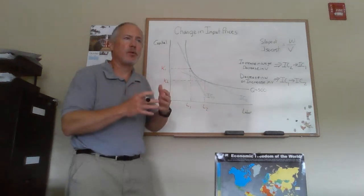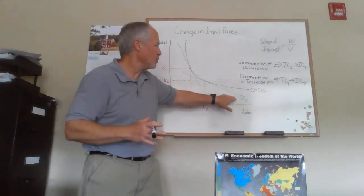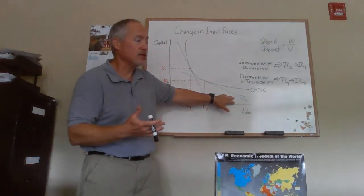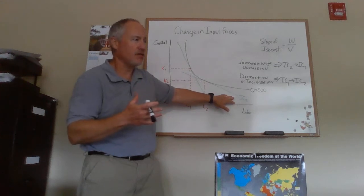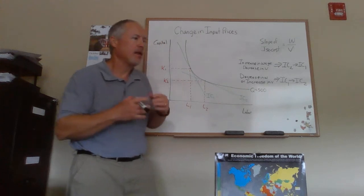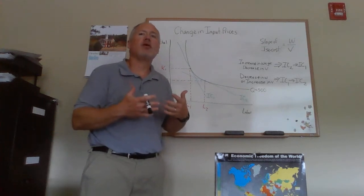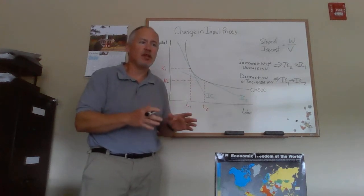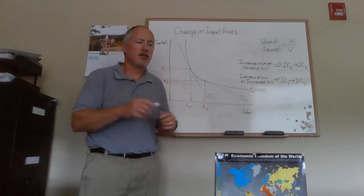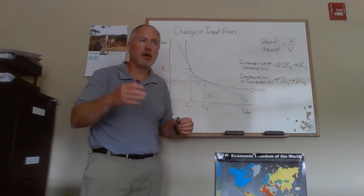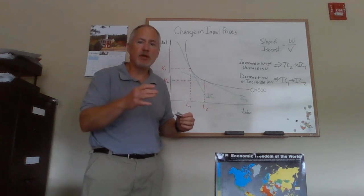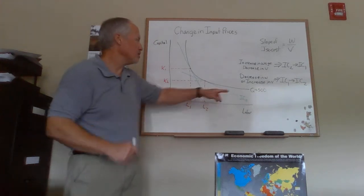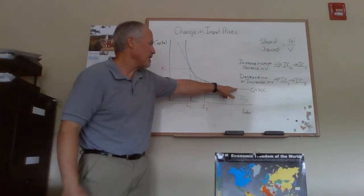Remember we don't care about which isocost a firm is on. They can be on whichever one they need to produce the amount of output that we've decided that they're going to produce. So this isn't like consumer when we had a change in the price in their budget line would pivot. What we're doing is we're going to anchor the firm.